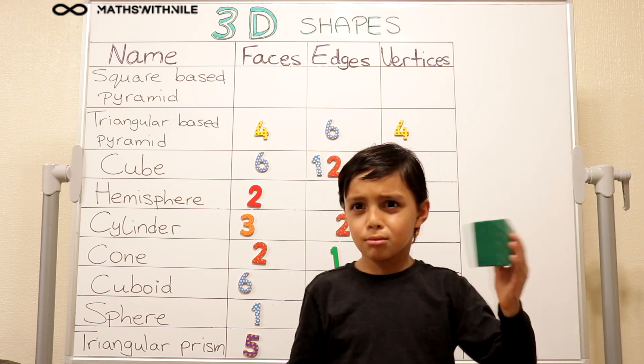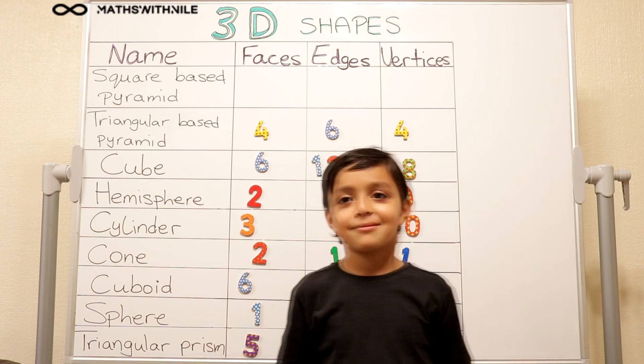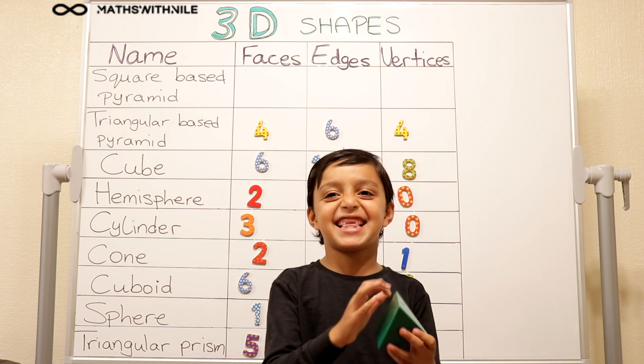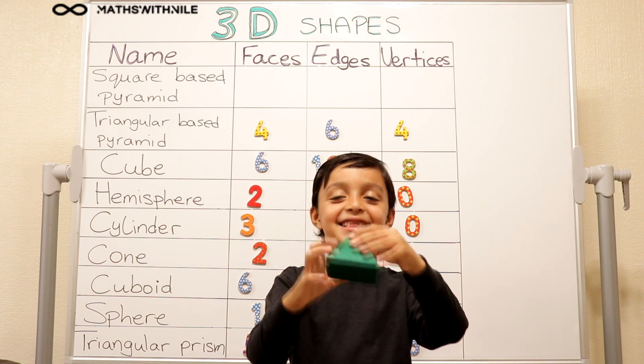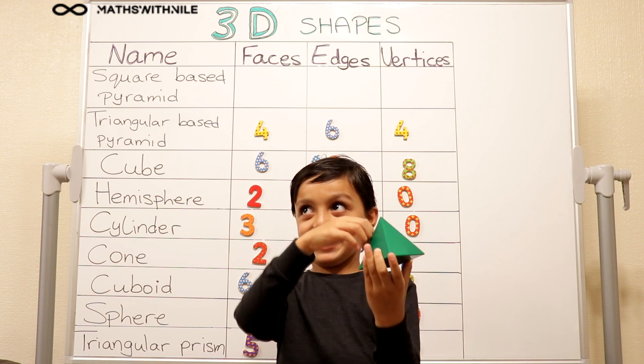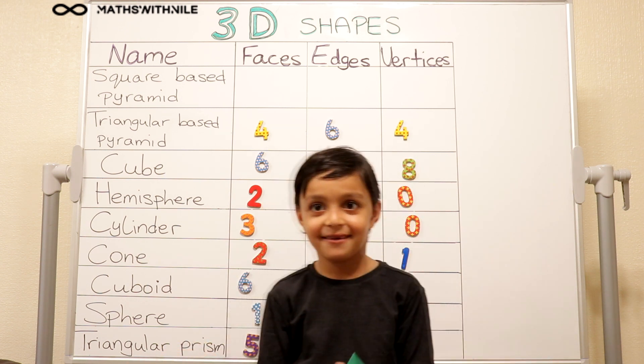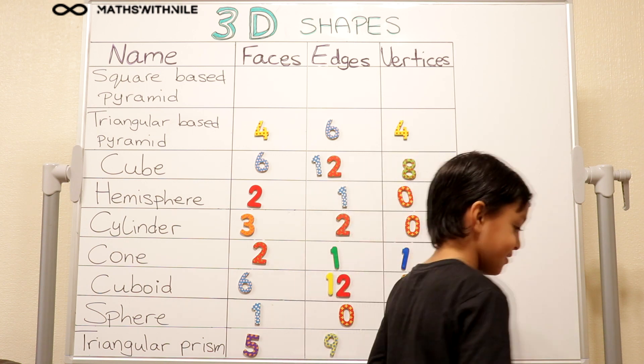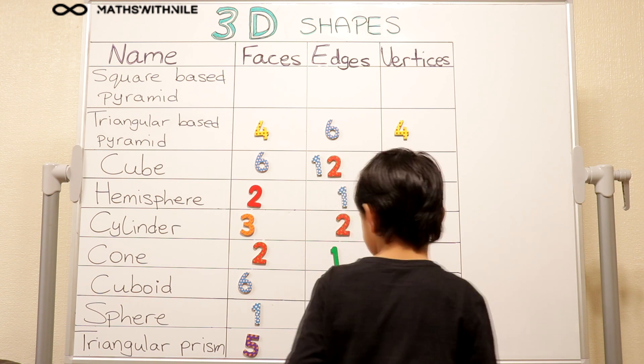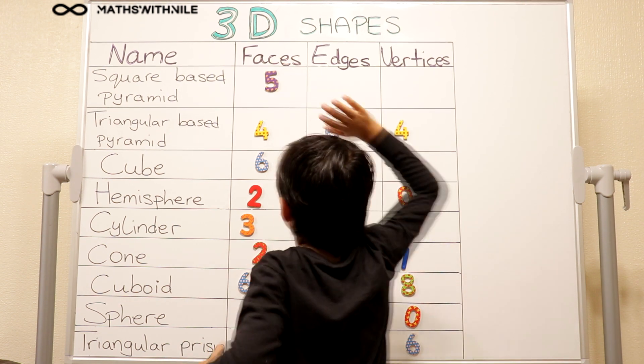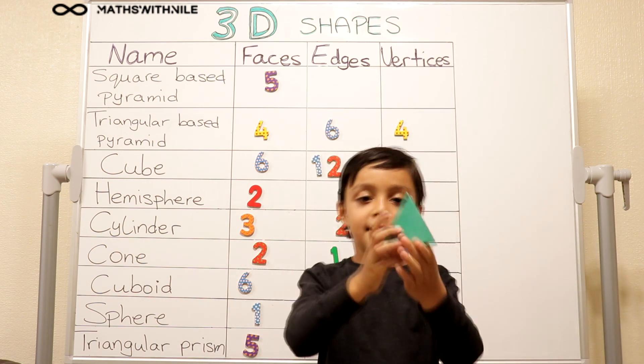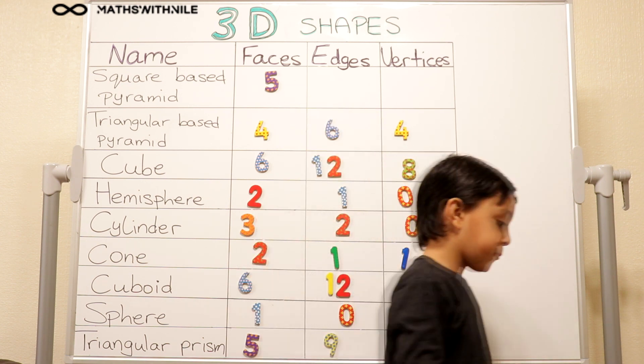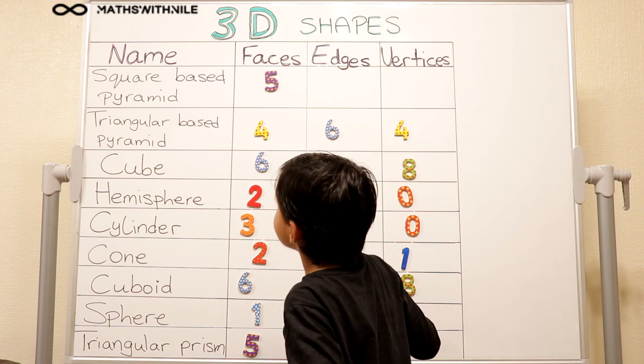It is called a square base pyramid. Why is it called a square base pyramid? Because it has a square base. And all the other faces come up to the point. Like a pyramid. Exactly. So, how many faces? One, two, three, four, five. And the edges. Lift it up so we can see. One, two, three, four, five, six, seven, eight. Excellent.